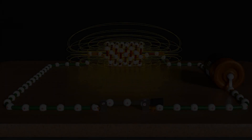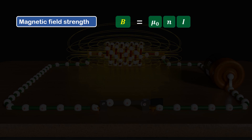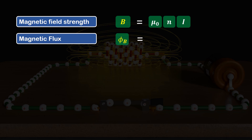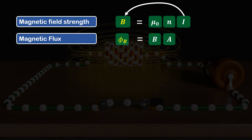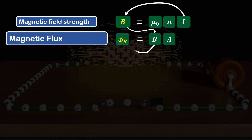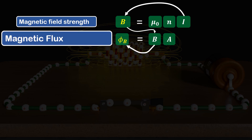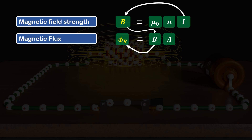As we have seen in the last video, magnetic field strength B is equal to mu-naught times n times I. Also, we know that magnetic flux phi-B is equal to B times A. From the first equation, we can say that if current changes, magnetic field strength will also change. And if magnetic field strength changes, then from the second equation, it is obvious that magnetic flux will also change. Which means, indirectly, magnetic flux phi-B is directly proportional to current I.